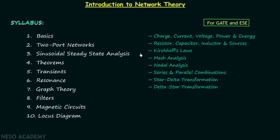Once we are done with those, we will move on to the circuit elements. The first circuit element is resistor, after which we will discuss capacitor, then inductor, and finally sources. In sources we will talk about ideal and practical voltage source, ideal and practical current source, and dependent and independent sources. There is one more topic — source transformation — but we will not discuss it in the basics chapter.